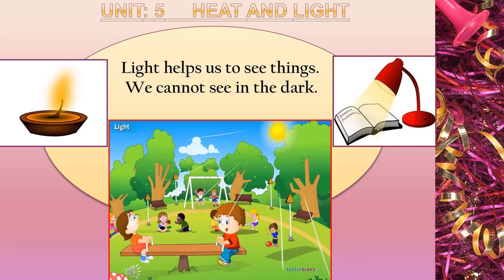Light helps us to see things; we cannot see in the dark. As you know, where you are sitting in the room there is light, and with the help of that light you can read the words we are reading. If you switch off the light and try to read the words from your books, you cannot — it is not possible to see things or read your books without light.